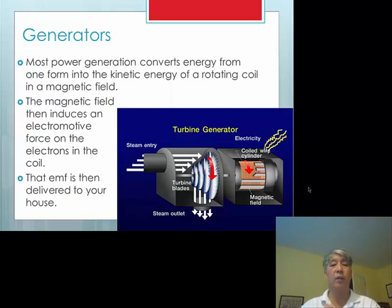First off, generators. We talked about this in class a little bit. But most power generation converts energy from one form into the kinetic energy of a rotating coil in a magnetic field. So we saw all of that with Faraday's law and the delta flux over delta T. The magnetic field, therefore, induces an electromotive force on the electrons in the coils. And that EMF is then delivered to your house.